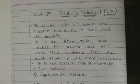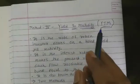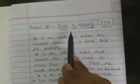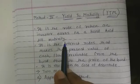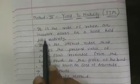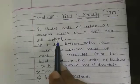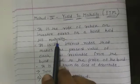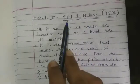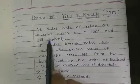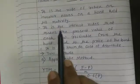Good morning students. We will continue our chapter with method number four: Yield to Maturity, that is YTM. First of all, what do you mean by YTM? Yield to maturity is a rate of return an investor earns on a bond held till maturity. So YTM is nothing but the rate of return which an investor earns on a bond up to the maturity period, and this return is termed as yield to maturity.